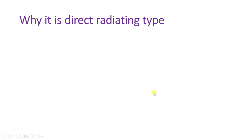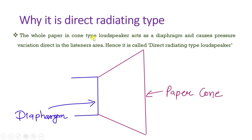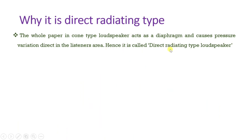The moving coil loudspeaker is referred to as a direct radiating type because the diaphragm is connected with the paper cone, and both vibrate together, generating sound directly from the cone and diaphragm. Since sound is generated directly from the cone and diaphragm, this type of loudspeaker is called a direct radiating type loudspeaker.